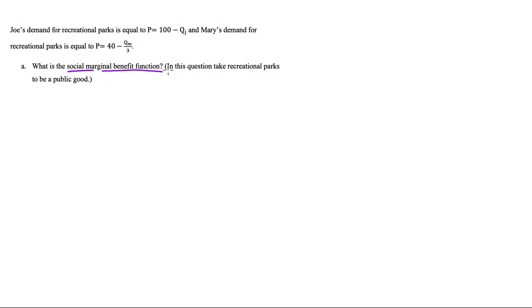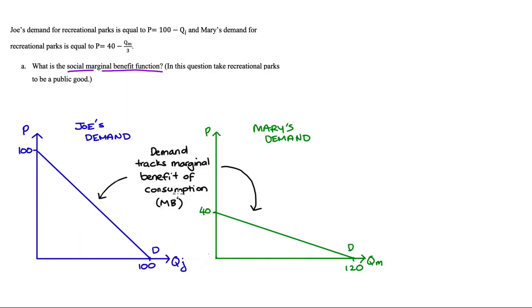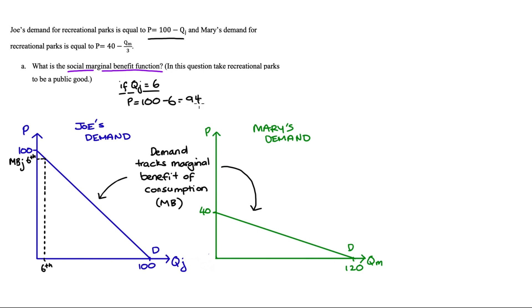Let's start by thinking about our social marginal benefit function. I've drawn out Joe and Mary's individual demand curves here. The first thing to understand is that demand curves can be interpreted as tracking the marginal benefit of consumption for each unit, and it is important that we recognize this interpretation is for each marginal unit. To demonstrate, for the sixth recreational park, we can tell how much benefit Joe gets by taking the height of his demand curve at Q = 6. Substituting into Joe's demand function, we get P = 100 - 6 = 94.